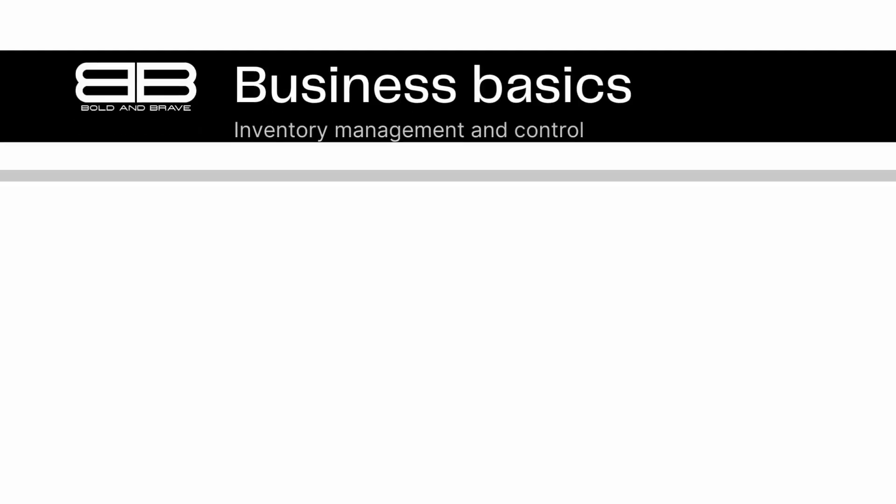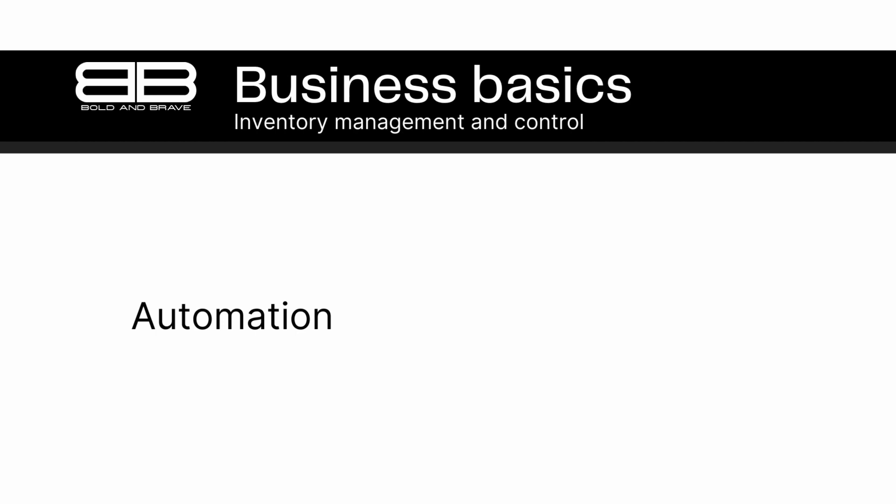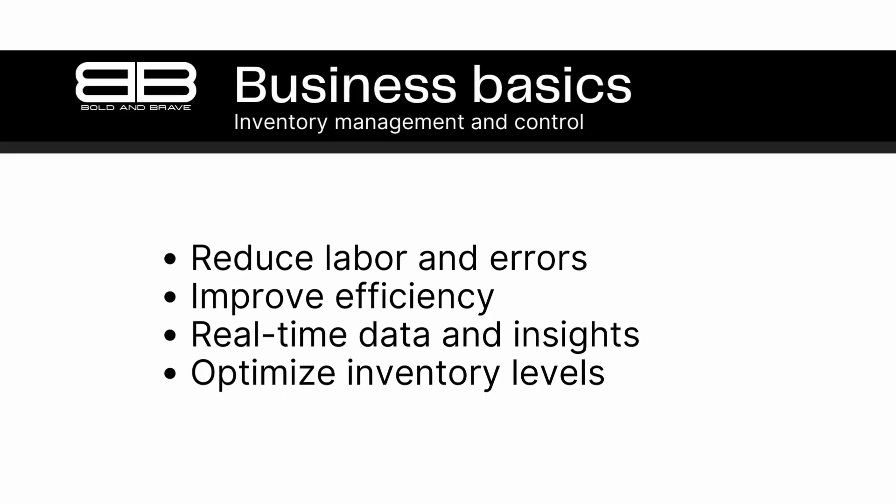Number 10. Automation. Many businesses are turning to automation to improve their inventory management and control processes. Automation can help to streamline operations, reduce errors, and improve overall efficiency. Automation involves the use of technology and software to streamline operations and reduce errors, helping businesses to improve their efficiency and productivity.